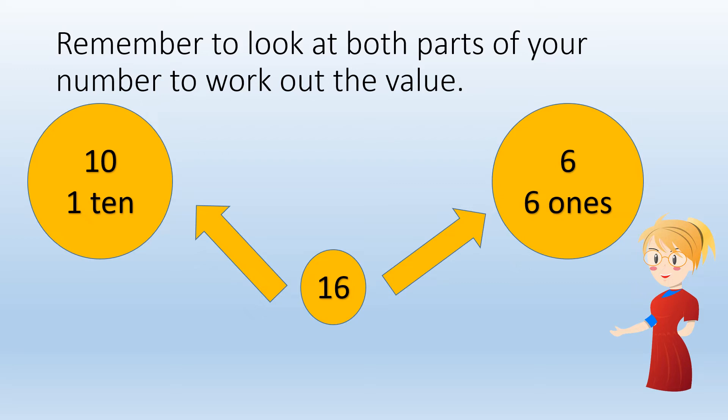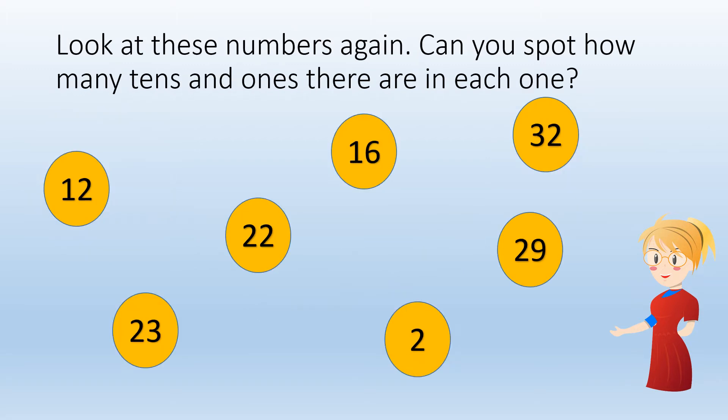Remember that you have to look at both parts of your number to work out the value. For example, the number 16 is made up of one ten and six ones. Look at these numbers again. Can you spot how many tens and ones there are in each one of them? Pause the video if you need some more time to practise.